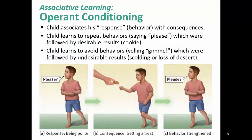Operant conditioning is when we use reinforcement or punishment. A child learns to associate his behavior with consequences. Children learn to repeat behaviors like saying please, which are followed by desirable results such as getting a cookie. They learn to avoid behaviors like yelling 'gimme,' which are followed by undesirable results like scolding or loss of dessert. Being polite and then rewarding leads to a repeat of the behavior. And I have to tell you, across the board, reinforcement works much better than punishment.